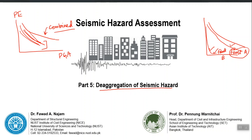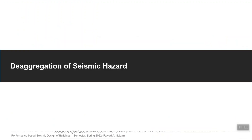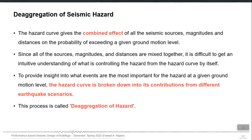It may be possible that in one PGA range one fault is governing and in another PGA range another fault is governing — I will show you one example. It is actually the process of breaking down the hazard into contributions from different earthquake scenarios.